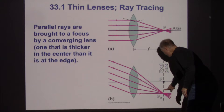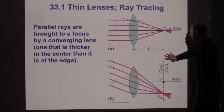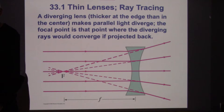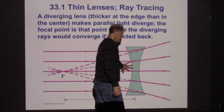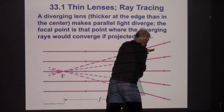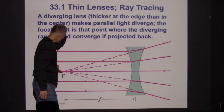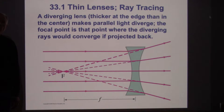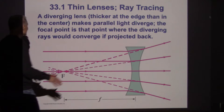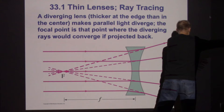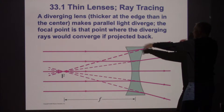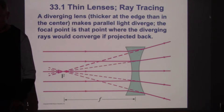If light comes in from a different direction, it focuses in the same plane — defining a focal plane. For a diverging lens, light comes in parallel, refracts at both surfaces, and spreads out. There is no real focal point; there is a virtual focal point on the object side. The image light and the object light are on opposite sides of the lens, which makes lenses easier to think about than mirrors.